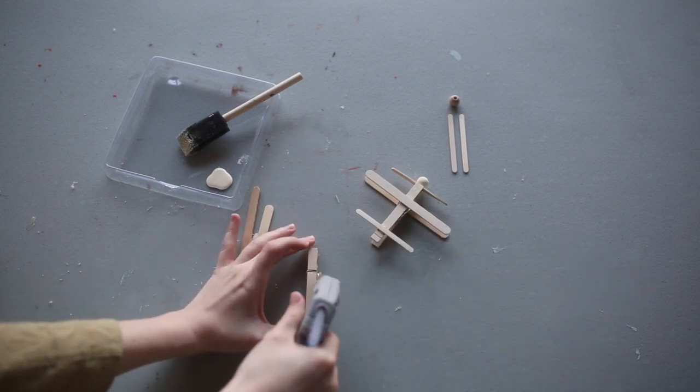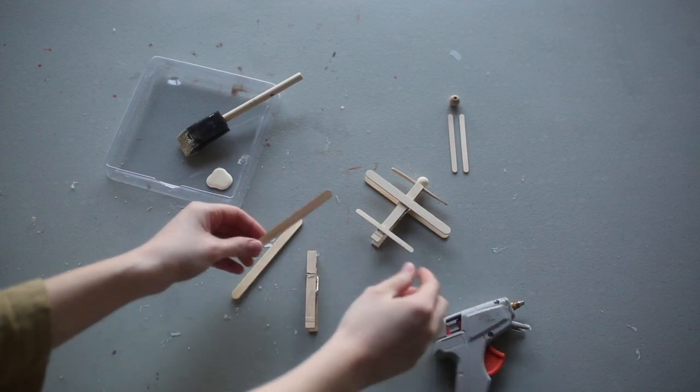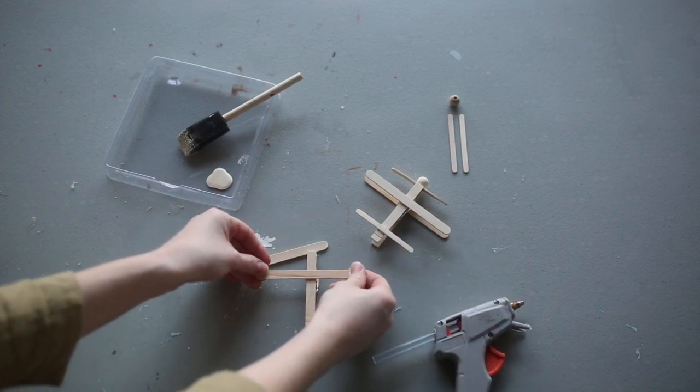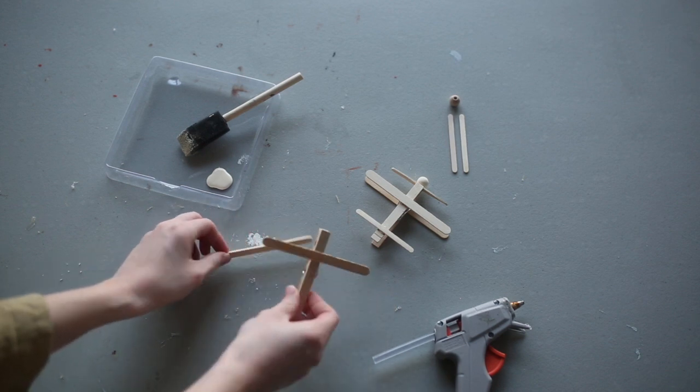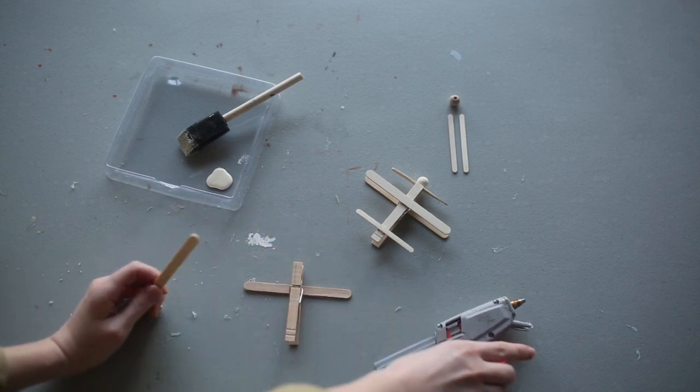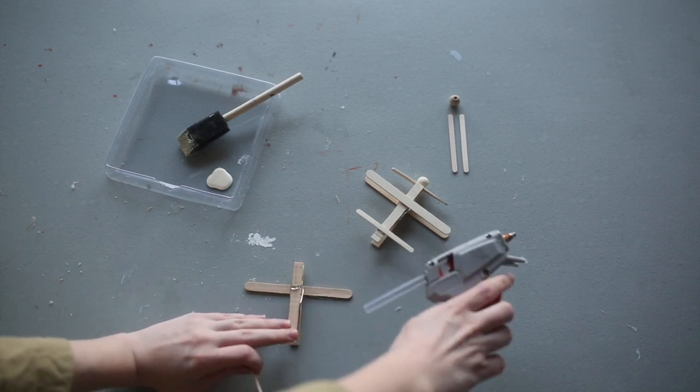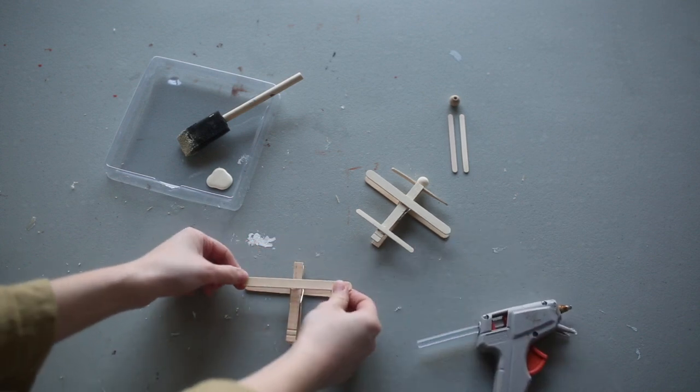So I'm going to use this metal clip as a guide. You just apply a thin line and place it on the top. If you're doing this with kids, white glue definitely works. I just like the hot glue because it dries really quick. And one directly across on the bottom.